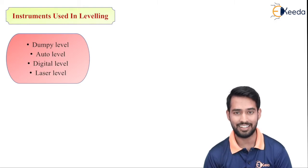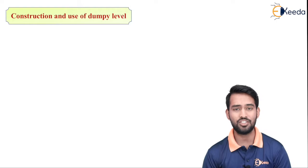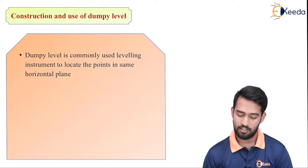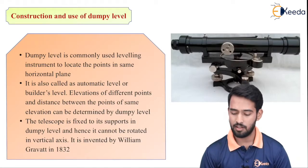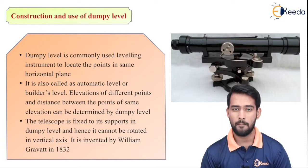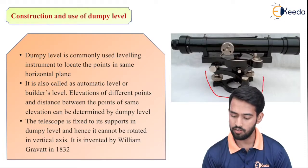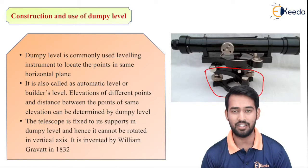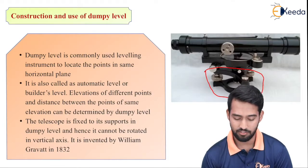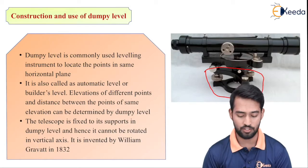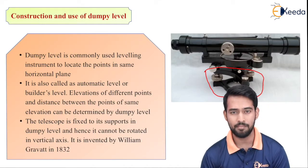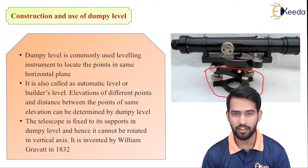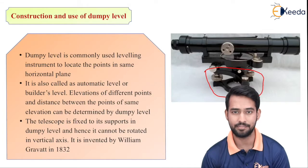Moving on to the next slide, we have the construction and use of dumpy level. As we can see in this picture, this is the typical picture of a dumpy level. It looks like a binocular having a telescope, through which we have to bisect the ranging rod. There is an arrangement for fixing it over a tripod. Dumpy level is a commonly used leveling instrument to locate points in the same horizontal plane.